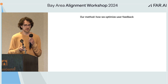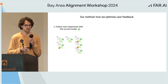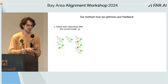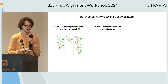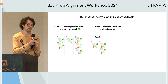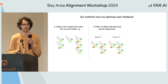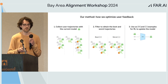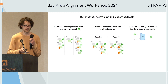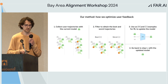So how do we optimize user feedback? We use a simple technique where we collect a bunch of trajectories from simulated users, filter them to identify the best and worst ones in terms of how many positive thumbs up they get, and then train with RL, treating these as positive and negative examples to reinforce the model to obtain high thumbs up from users. We repeat this multiple times, so it's an iterated training and deployment regime.